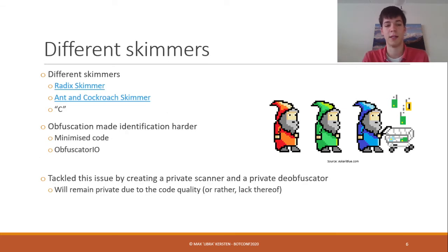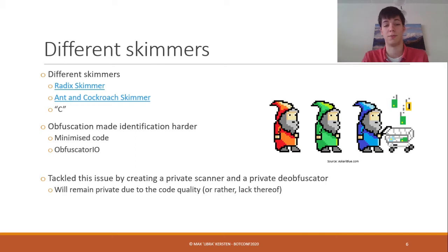There are different skimmers. One is the Radix skimmer, which Sunsec first wrote about in March 2019 — my own blog followed a few days later, but they were first to publicly write about it. There is also the Ant and Cockroach skimmer, written about in detail by RISC-IQ a few days prior to this talk. Lastly, the skimmer I mainly encountered during my research I named 'C.' My main intention was to look into the victims — the affected websites — and not necessarily the skimmers themselves. So I kept it as C, but there are three I mainly looked at, and the Radix loader will be covered in a bit.